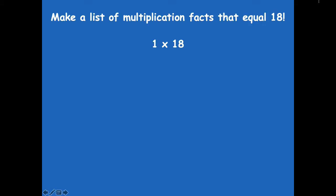Make sure to pause if you need more time. I came up with 1 times 18, 18 times 1 — because of that commutative property — 2 times 9, 9 times 2, 3 times 6, and 6 times 3. Those are the multiplication facts that would equal 18.